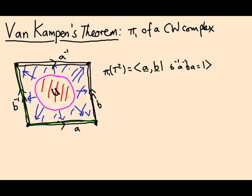Then there's a two cell, which is this square, the square itself, the interior. And lo and behold, there's one relation which corresponds to that two cell.